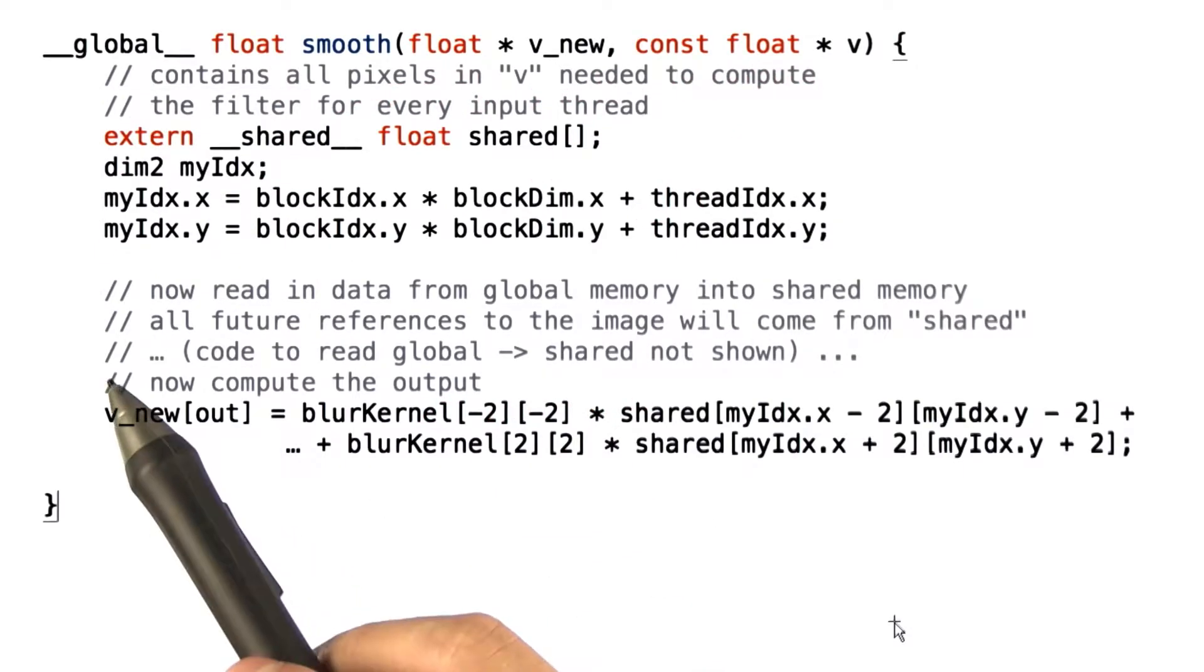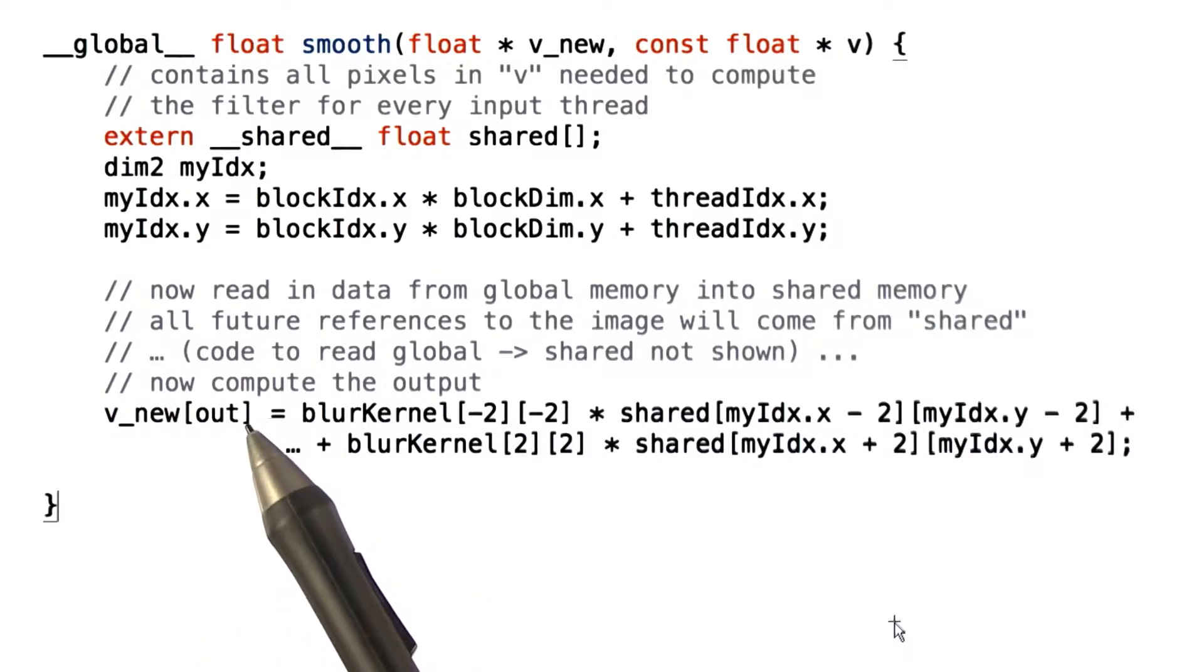Naturally, we want to use shared memory to store the image so that we save memory bandwidth by reading each pixel as few times as possible.